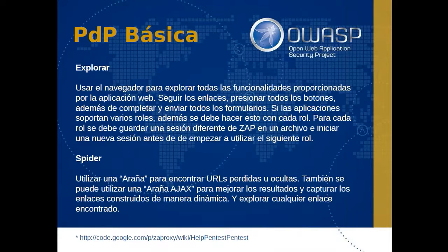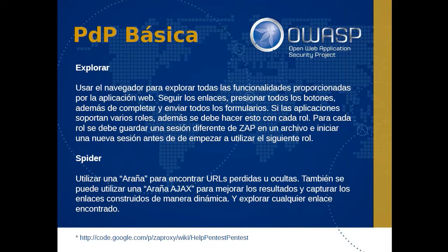Vamos a realizar una prueba de penetración básica detallada también en las páginas del proyecto ZAP. Una acotación antes de continuar: esto es una prueba de penetración básica o fundamental. Una prueba de penetración implica una gran cantidad de procedimientos y procesos a realizar. Aquí se está haciendo algo muy resumido, mínimo, lo cual no se podría comparar con la guía de pruebas de OWASP Testing Guide en su versión 4, la cual tiene una gran cantidad de pruebas a realizar. Esto es simplemente una demostración de las principales funcionalidades de ZAP Proxy.